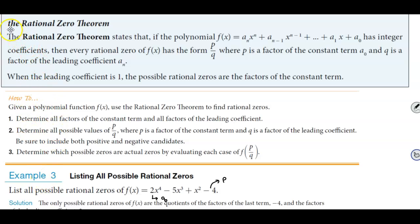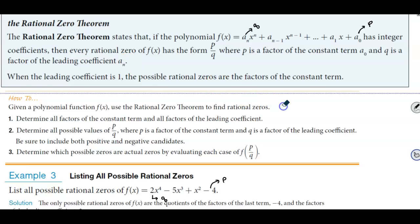For example number three, we want to define the rational zero theorem. The rational zero theorem states that if the polynomial f(x) has integer coefficients, then every rational zero of f(x) has the form p over q, where p is a factor of the constant term and q is a factor of the leading coefficient, which is a subscript n. When the leading coefficient is 1, the possible rational zeros are the factors of the constant term.